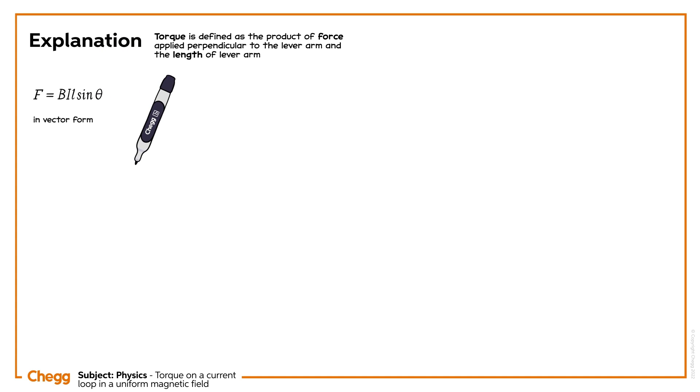In vector form, vector f is equal to i times vector l cross vector b.